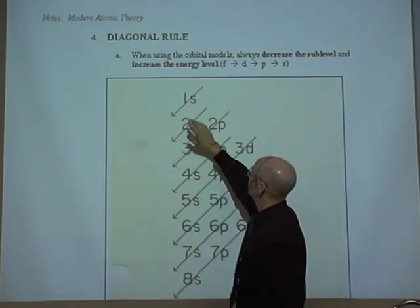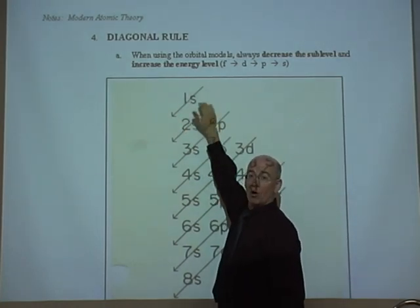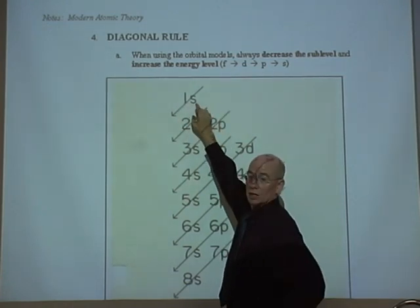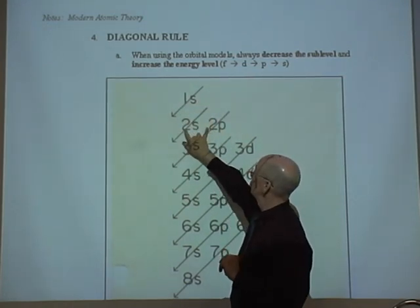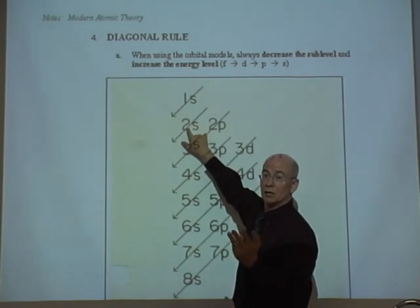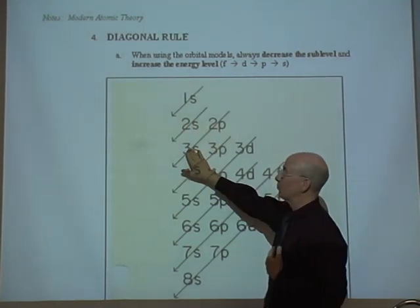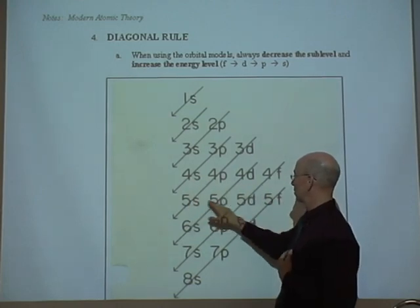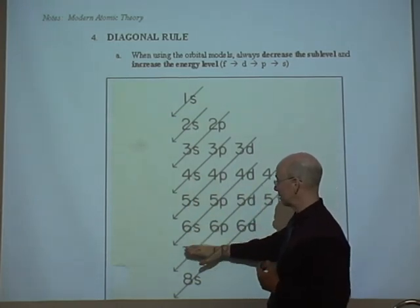But an easier way to do that is we simply line out all the rows of the periodic table. So we have 1s, which has one sublevel. We have energy level 2 has 2s, 2p. Energy level 3, 3s, 3p, 3d. Energy level 4 has 4 sublevels and everybody has 4 from then on. 5, 6 and 7.